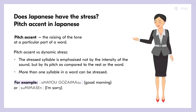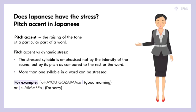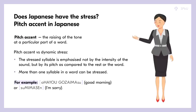In Japanese, more than one syllable can be stressed, so several sounds might be pronounced with a raised tone compared to other sounds. In our course, we will emphasize stressed syllables by writing them in capital letters in transcription, or showing them in color in Japanese hiragana or in katakana.